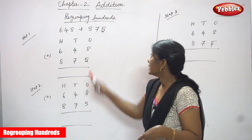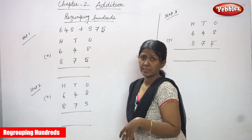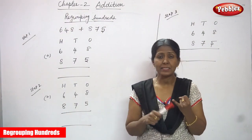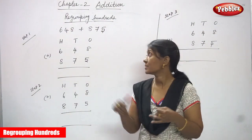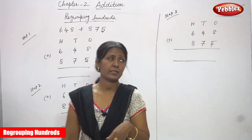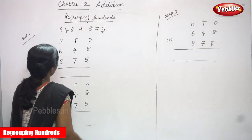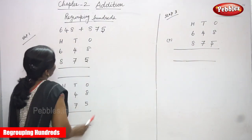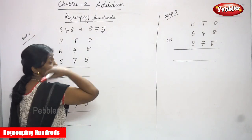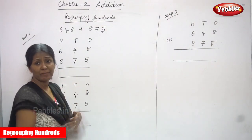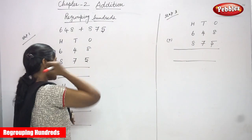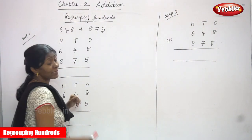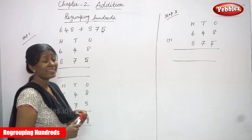Now we are going to see regrouping hundreds. Already we have seen three-digit regrouping, then regrouping tens, regrouping ones. Now we are going to see regrouping hundreds. The first number is 648 and the second number is 875. This is also a three-digit number. We are going to add these three-digit numbers, and this is regrouping hundreds.